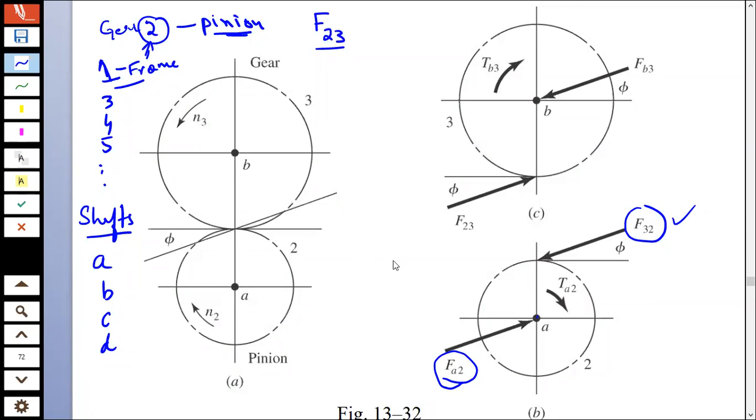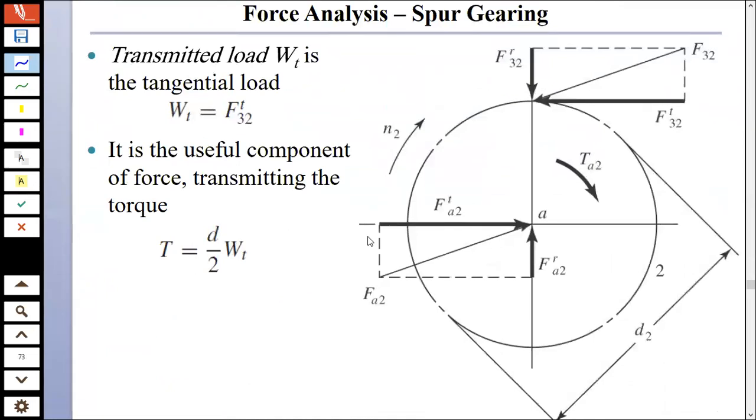We can resolve these forces into components. For example, I will resolve these components into two components. One is this component which is F32R, and that is the radial component. F32T, that is the tangential component. This is the one that we want. This is the one that transmits the load. The transmitted load is equal to the tangential component of this force.